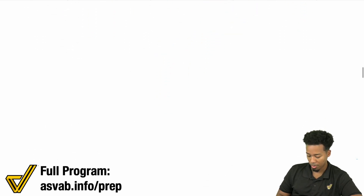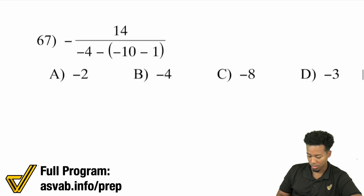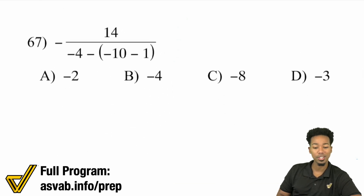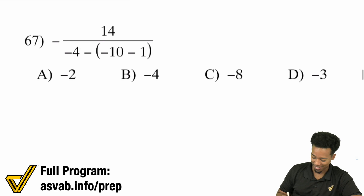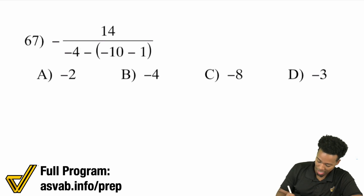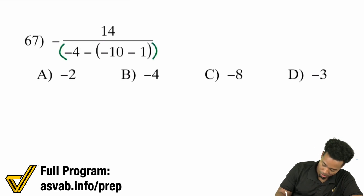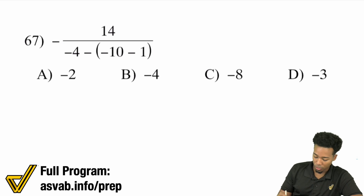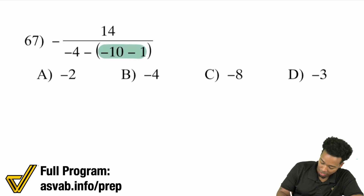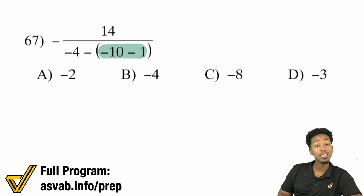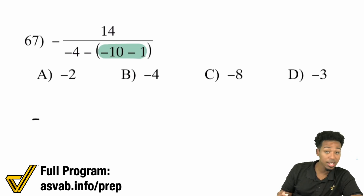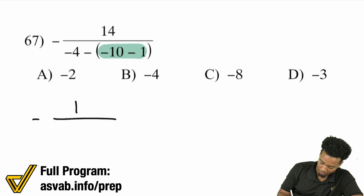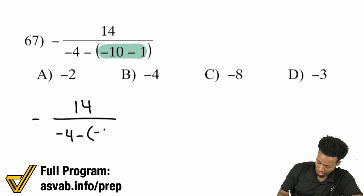Let's do one more and we are set. We're going to take care of the entire denominator first — we have to take care of the groups. I see there's a group inside of that group. Negative 10 minus 1 becomes negative 11. So we'll have 14 in the numerator, then negative 4 minus, and that's going to be negative 11.